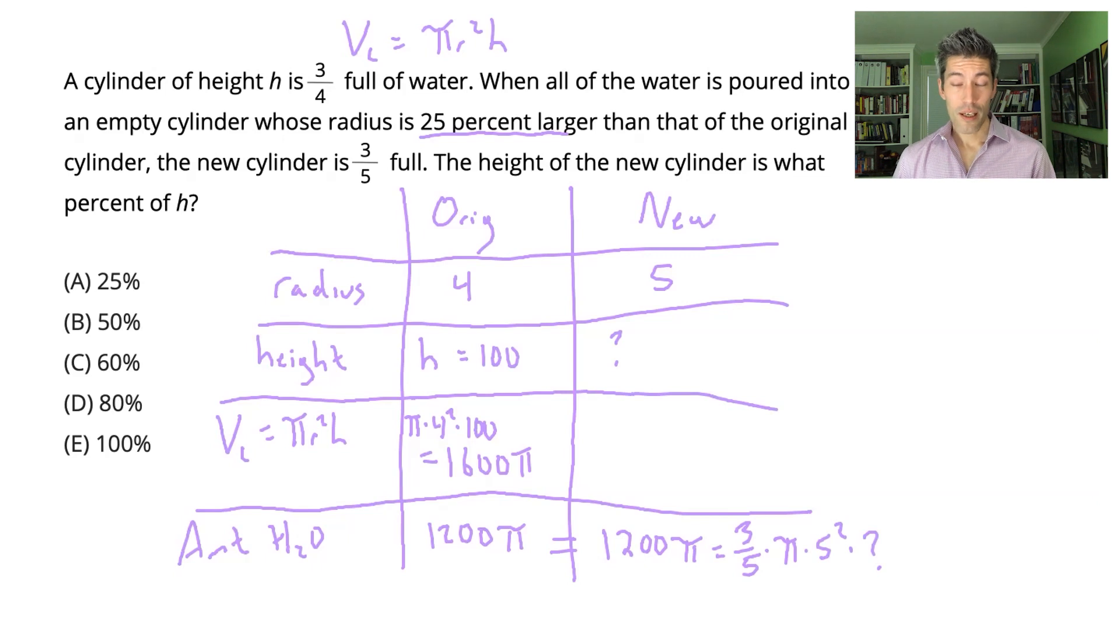This equation looks ugly, but thankfully a lot of stuff is going to simplify here. You might notice that there's a π on both sides of the equation. Let's go ahead and get rid of both of them. We're also dividing by 5 on the right side, yet we're multiplying by 5 a couple times on the right side. There's no point in multiplying by 5 if you're just going to divide by it. So get rid of one of these 5s and this 5 in the denominator.